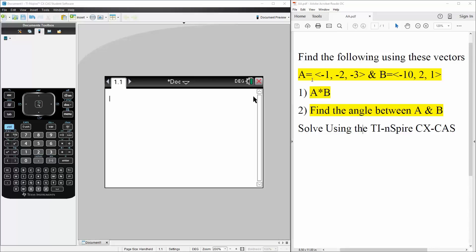Okay, in this problem we are given the vector A, which is negative 1, negative 2, negative 3, and vector B, which is negative 10, comma 2, comma 1.